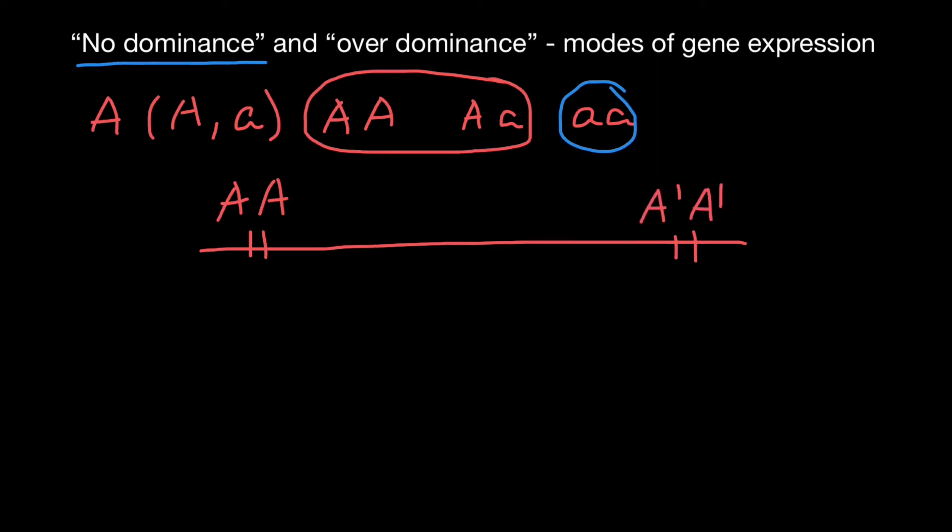So we don't have here a dominant or recessive allele. We have just two different alleles. And for example, if we talk about plants, let's say that this plant is going to be one meter in height, and this would be two meters. And if, for example, we get another genotype, a third genotype, which is going to be capital A and capital A prime, phenotypic expression of this genotype would be exactly in the middle. So it's going to be 1.5 meters. So it is intermediate between these two. We call this no dominance.